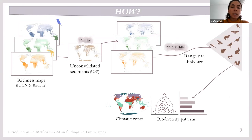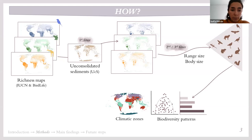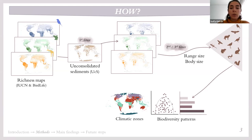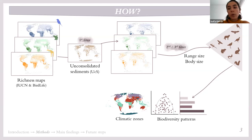We are going to filter this data with a series of filters simulating bias sources. The first filter is the geological one, for which we are going to use an unconsolidated sediment map, because fossilization mainly takes place in sedimentary environments. Then we are going to apply a second simulated bias — a biological one — focusing on the range size and body size of the species, with bigger and wider-distributed animals presenting a higher probability of being sampled or recovered as fossils.